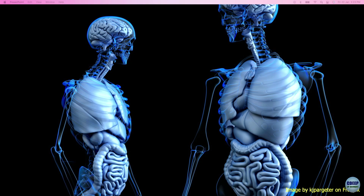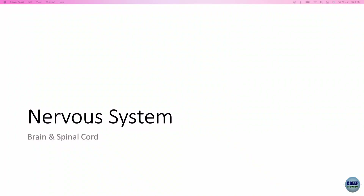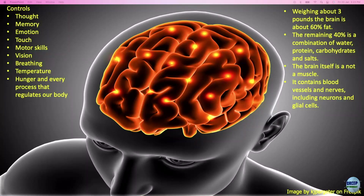Today we'll focus on the brain. The nervous system includes your brain and spinal cord. The function of the brain is to control thought, memory, emotions, touch, motor skills, vision, breathing, temperature, hunger, and every process that regulates our body.